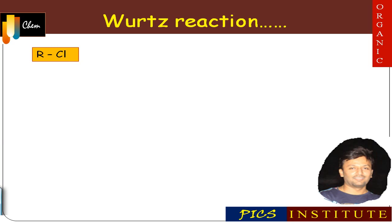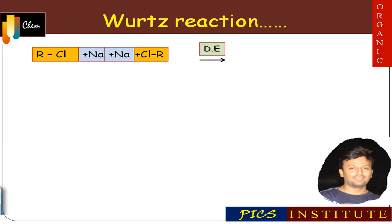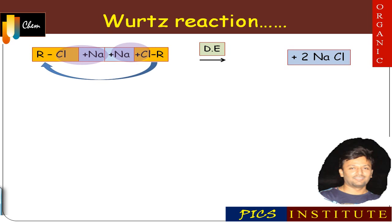The next reagent is sodium in dry ether, and the reaction is called the Wurtz reaction. In this reaction, two molecules of similar alkyl halide react together in the presence of sodium. Sodium abstracts halogen from the alkyl halides to form NaCl, and the remaining alkyl parts combine together to form an alkane.